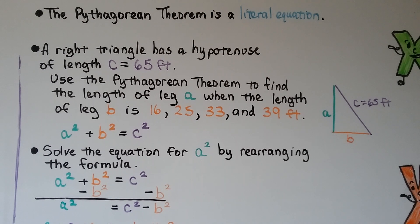We solve the equation for a squared by rearranging the formula. We can subtract b squared from each side of the equal sign, which will give us a squared is equal to c squared minus b squared.